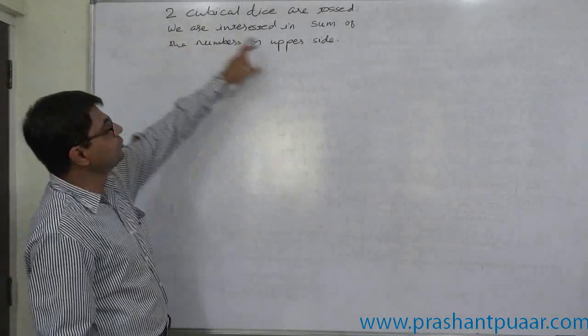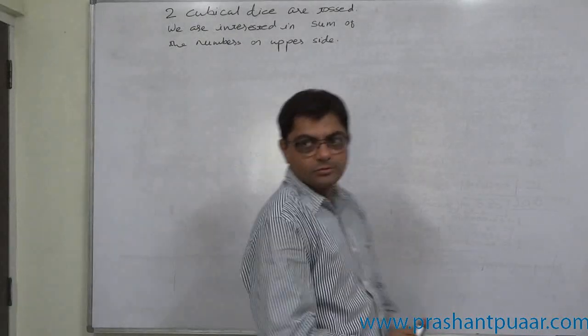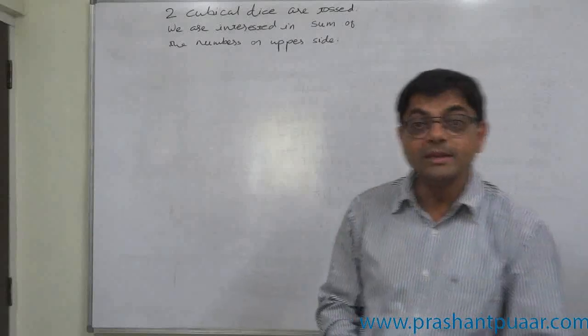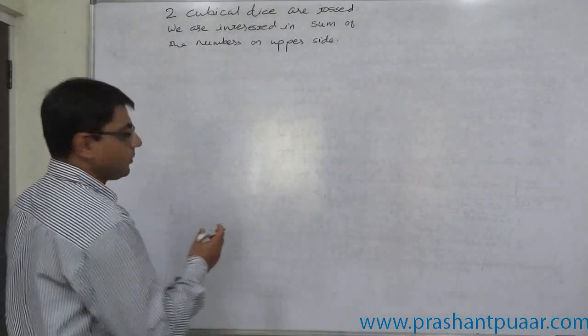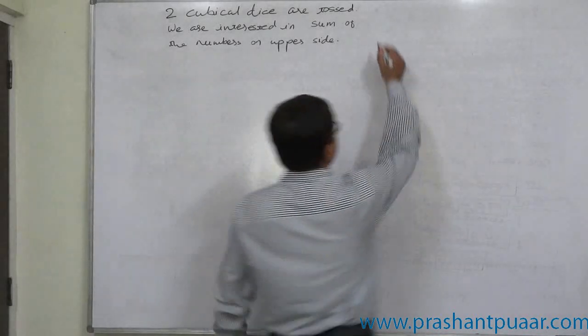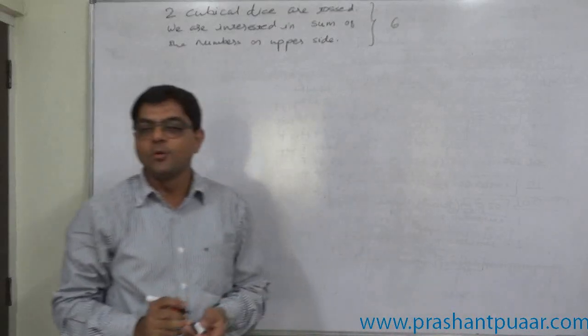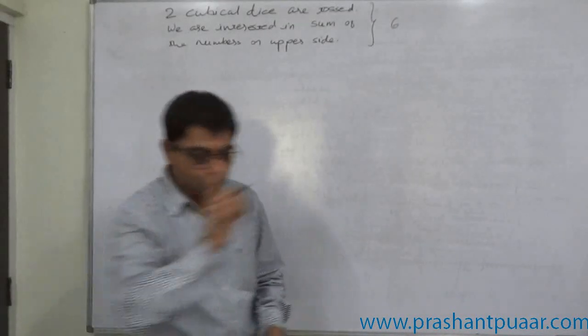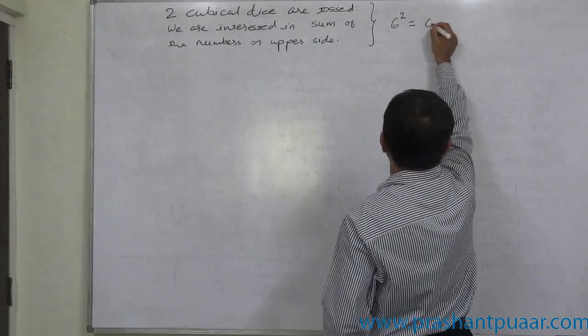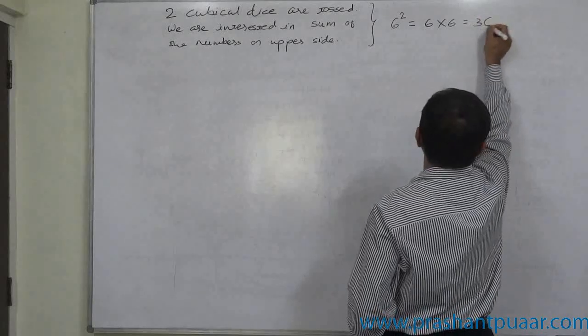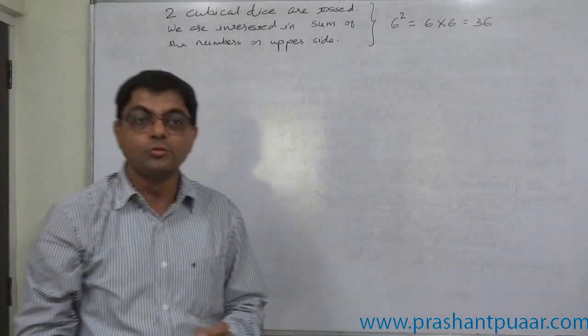Now, the new case is two cubical dice are tossed and we are interested in the sum of the numbers on the upper side. How many cases are possible, first of all? How many sides are there on a single cubical die? There are six sides. How many cubical dice are there? Two. So total number of outcomes, six squared, that means 36 different outcomes are possible if we toss two cubical dice.